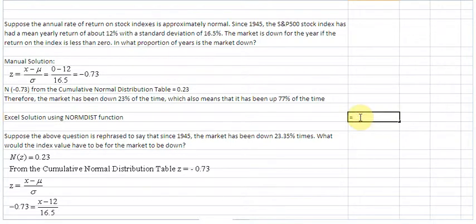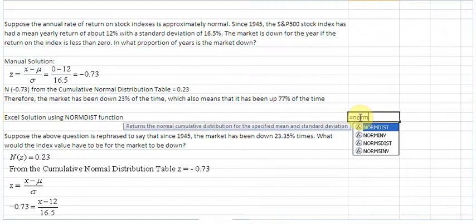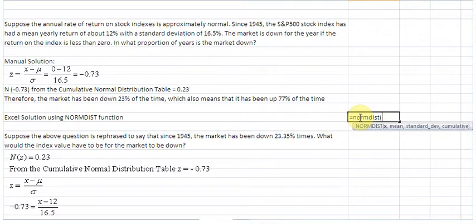We write an equality sign and invoke the NORMDIST function by writing N-O-R-M-D-I-S-T and then we start a bracket. Excel is asking us to enter the parameters. The first one is the x value or our desired value, which in this example is 0. Then, after the comma, we need to enter the mean value, which is 12. Comma, then we need to enter the standard deviation, which is 16.5.